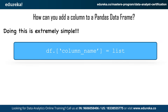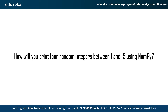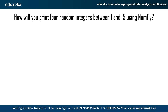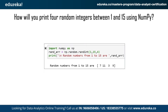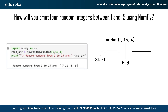The next question is: how will you print four random integers between 1 and 15 using NumPy? You can use numpy.random.randint with a few parameters. The randint function has three parameters: the first value represents the start point, the second value is the endpoint, and the third value is the number of integers you want generated from this method.